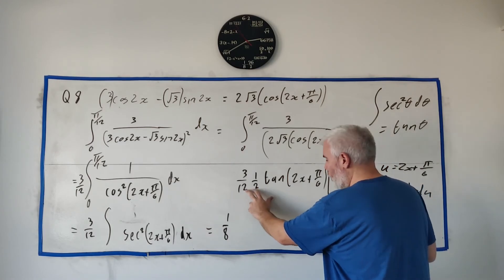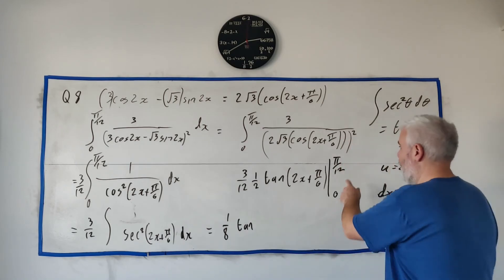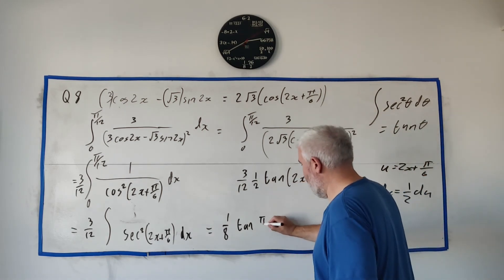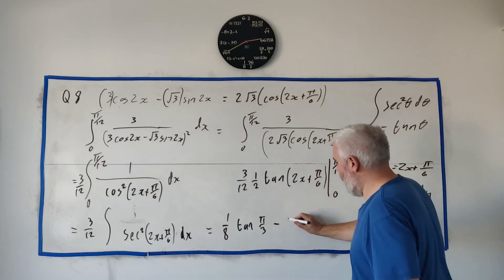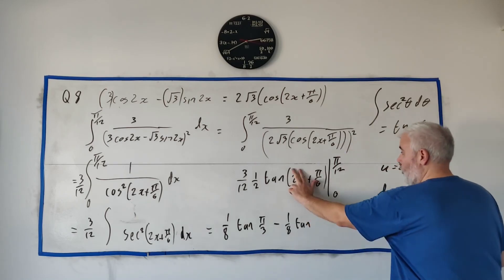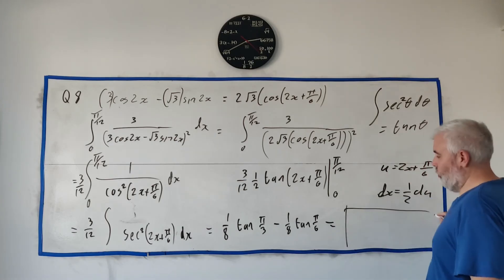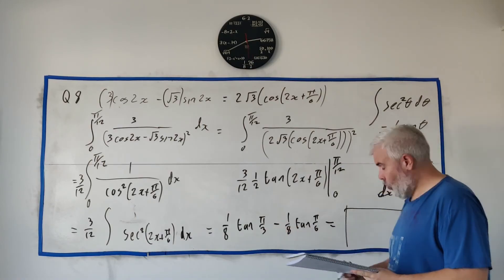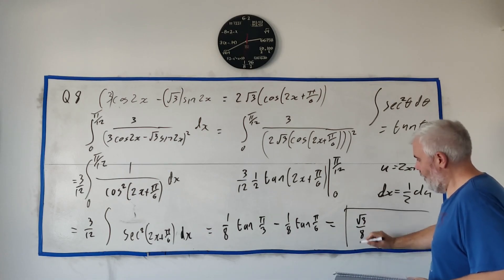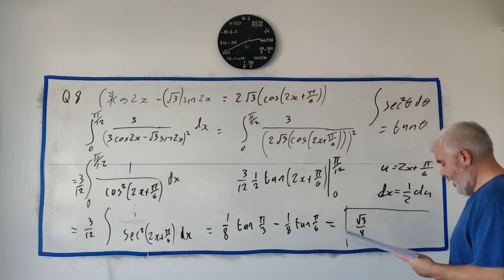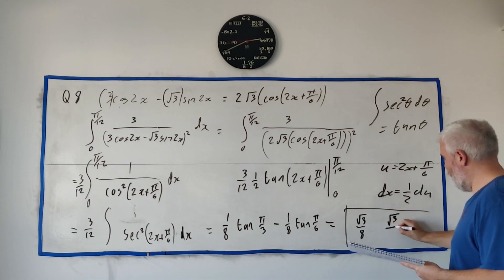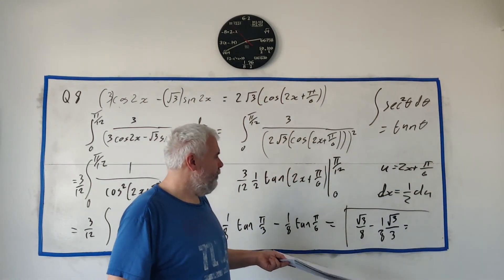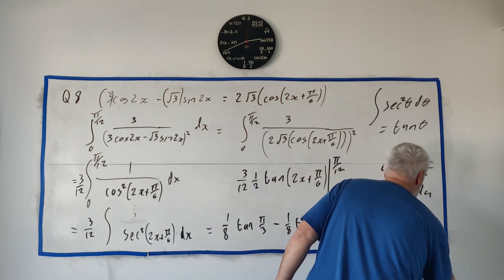Evaluating the bounds: putting in the upper limit x = π/12, we get 2·(π/12) + π/6 = π/6 + π/6 = π/3. Putting in the lower limit x = 0, we get tangent(π/6). So the expression becomes (1/8)·[tangent(π/3) − tangent(π/6)]. Tangent(π/3) = √3, so that's √3/8. Tangent(π/6) = √3/3, so that's √3/3 divided by 8 = √3/24. Putting it all in the calculator gives the final answer of √3/12.